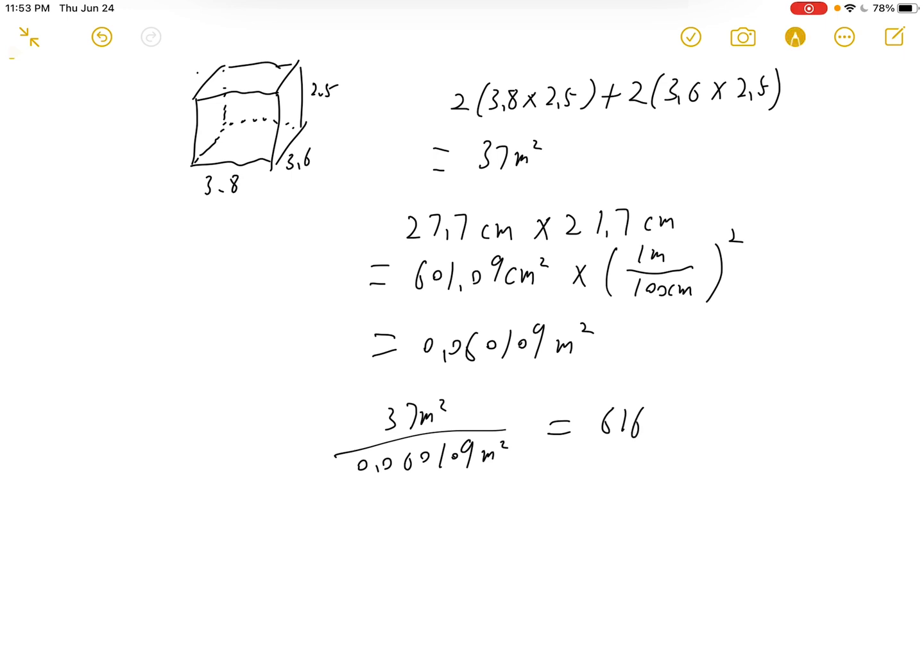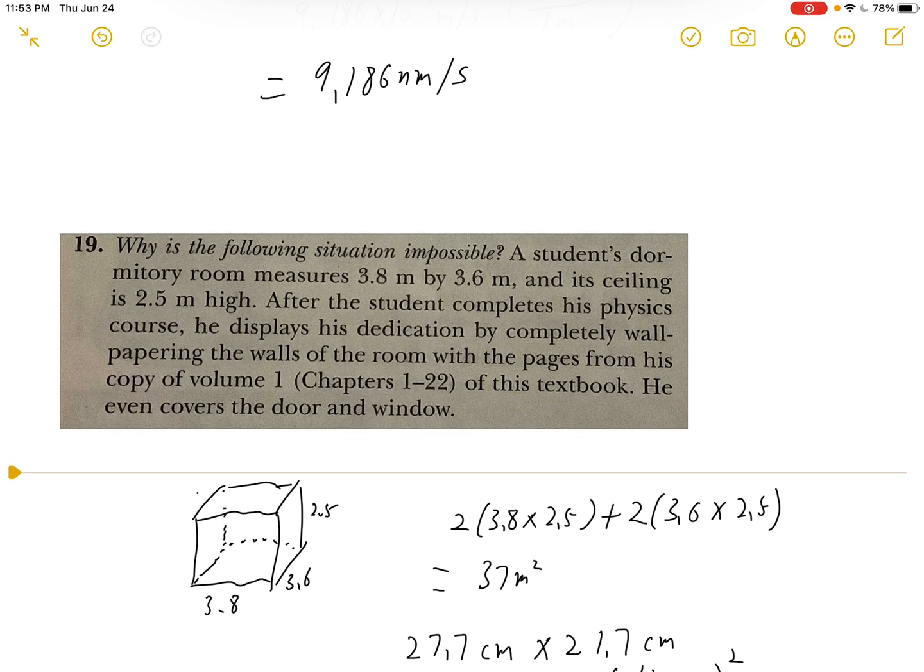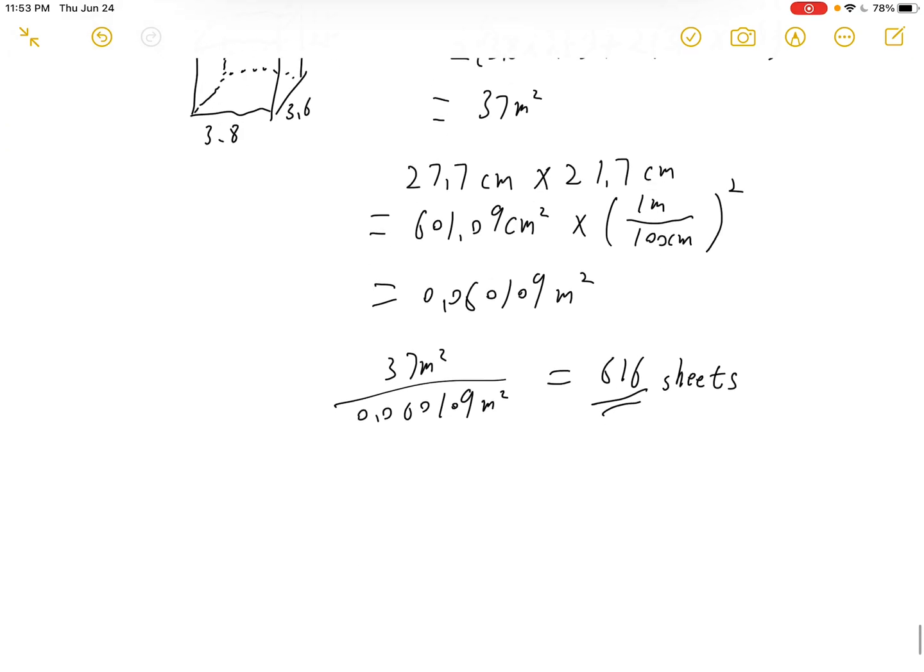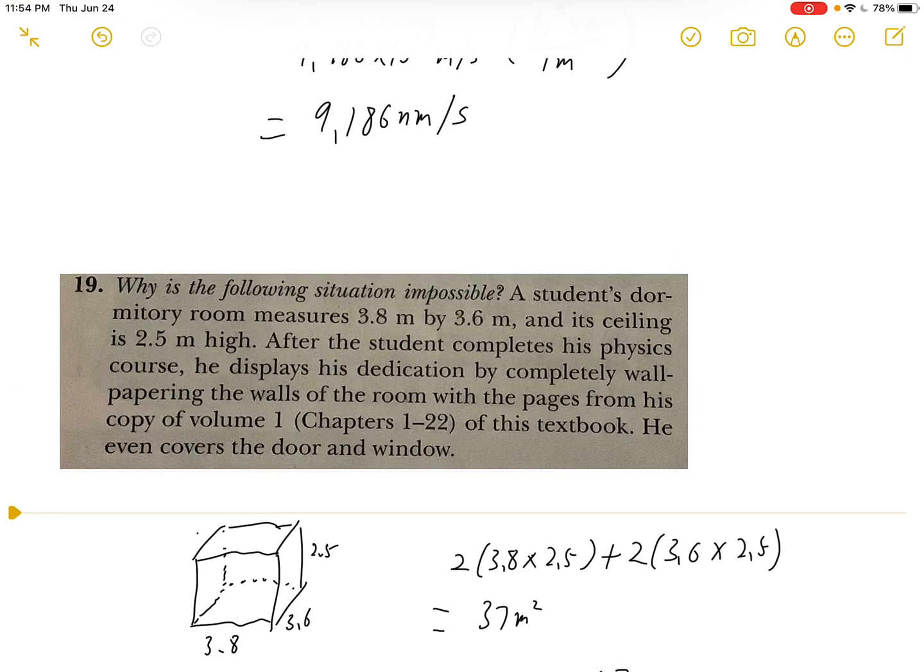This is how many sheets we need. But the copy of volume one is only 736 pages, which is not enough. If we need 616 sheets, we will need 1,232 pages.